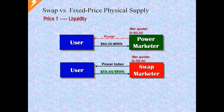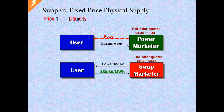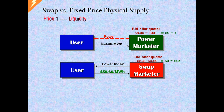Greater liquidity results in narrower bid-offer spreads. In this example, we see the physical market quoting 58 bid, 60 offer, while the financial market is quoting 58.40 bid, 59.60 offer. The user pays the higher offer price. Note that both have the same mid-market price of 59. The swap price quoted is cheaper because the spread quoted around the mid-market is narrower — plus or minus 60 cents compared to plus or minus one dollar in the physical market.